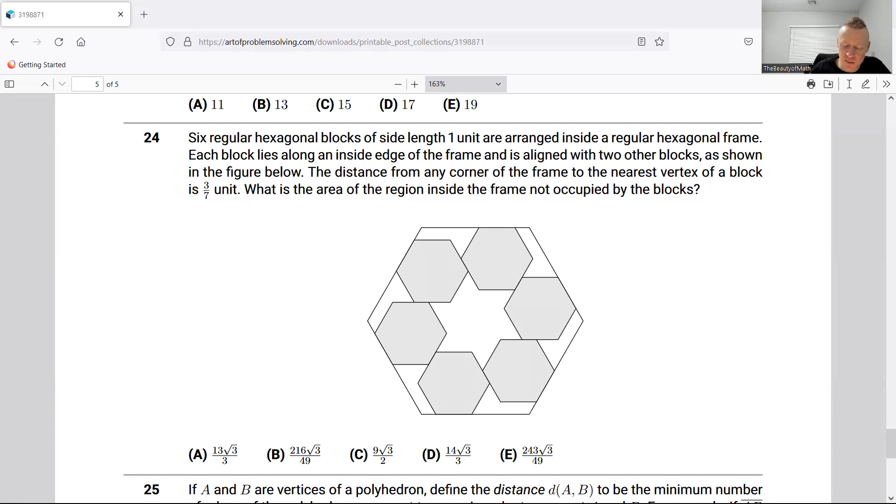Six regular hexagonal blocks of side length one, the shaded ones, are arranged inside a regular hexagonal frame. That's the outer one. Each block lies along an inside edge of the frame and is aligned with two other blocks as shown. So it's aligned here and here. Okay, so that's what they're saying. The distance from any corner of the frame to the nearest vertex of a block, so the nearest corner of the frame that's here, to the nearest vertex that's here, that distance is three-sevenths.